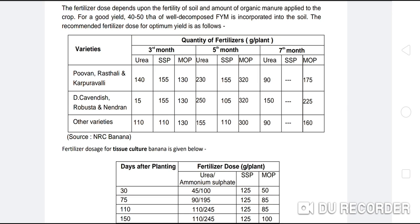At 7 months, for Puvvan-type varieties, urea is 90 g, SSP is stopped, and MOP is increased to 175 g. For the next group of varieties, urea is 150 g, SSP is not given, MOP is 225 g. For other varieties, urea is 90 g, SSP not given, MOP 60 g. The source for these recommendations is the National Horticulture Board and National Research Centre Banana, Trichy. These are open-condition recommendations. Now we also have tissue culture propagation, where fertilizer doses are different.